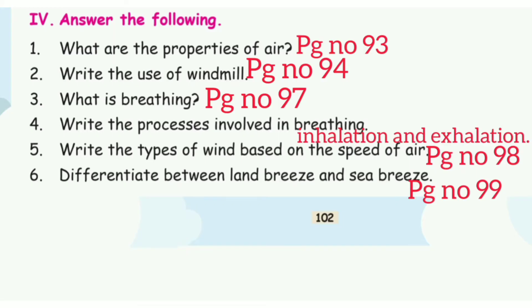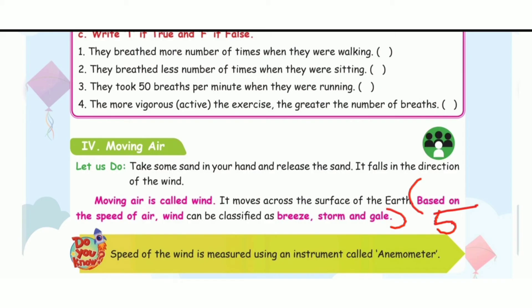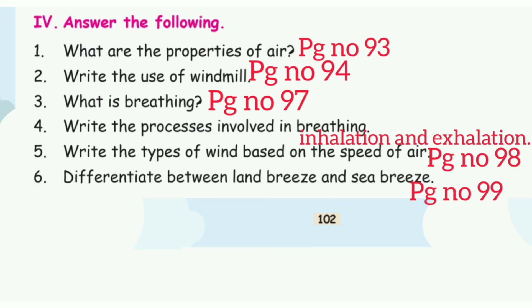Fourth question: Write the process involved in breathing - inhalation and exhalation. Fifth question: Write the types of wind based on the speed of air. It is page number 98, last two lines. Wind can be classified as breeze, storm, and gale.